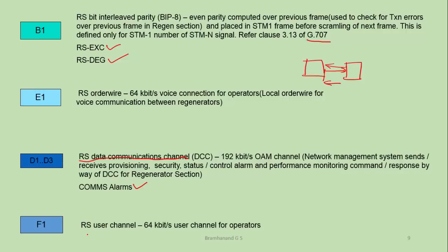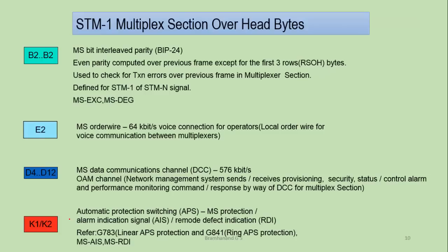F1 byte is similar to E1 but is basically used for data communication. If there needs to be a file transmission between two regenerators by the operators, then this particular byte can be configured to transfer any data between the provisioned regenerators. Those are the functions of the regenerator section overhead.